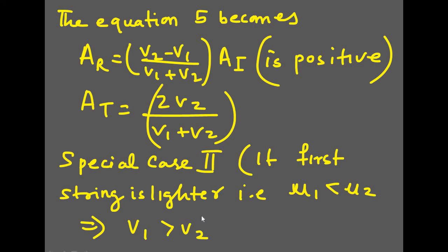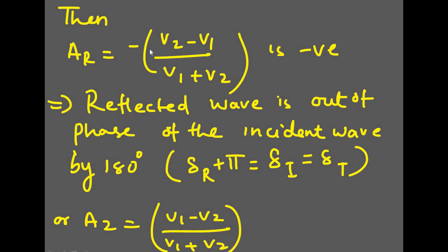Special case 2: the first string is lighter, that is, mu1 is less than mu2. This means the first string's velocity is greater. The equation acquires a minus sign, so A_r becomes negative — specifically, A_r equals (v1 minus v2)/(v1 plus v2). The reflected wave is 180 degrees out of phase with the incident wave: delta_r equals delta_i plus pi. The reflected wave is exactly upside down compared to the incident wave.